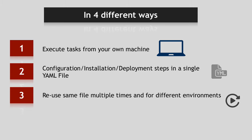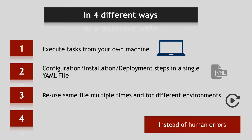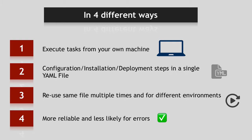Third, you can reuse the same file to execute the same task sequence multiple times if needed — on the same server when doing a re-upgrade, or on different environments like dev, staging, and prod to create identical environments. Fourth, since humans are prone to make mistakes or forget things, especially with complex sequences of IT tasks, automating with tools like Ansible makes it more reliable and less likely that errors will happen when configuring servers or deploying applications.